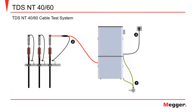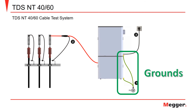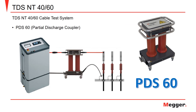The test leads used with the TDSNT consist of the high voltage lead, the grounding leads for the upper and lower test modules, and the power supply cable. To use the TDSNT for partial discharge measurements, the PDS60 partial discharge coupler is required.